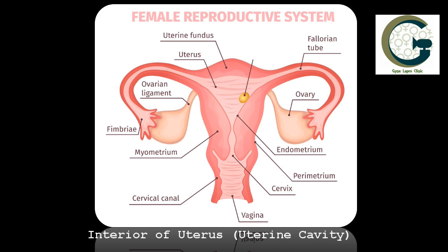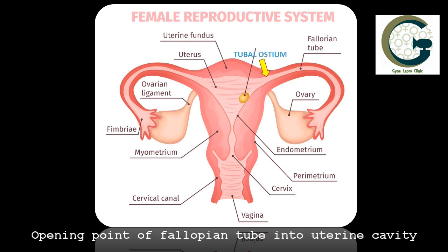The interior of the uterine cavity is also known as the endometrium. It is here that the normal pregnancy grows. The two fallopian tubes open out to the interior of the uterine cavity through openings which are known as the tubal ostium.